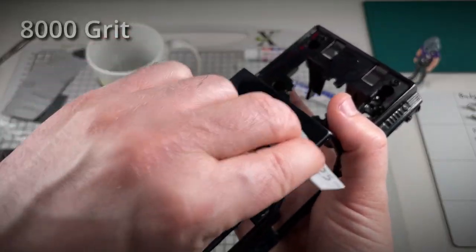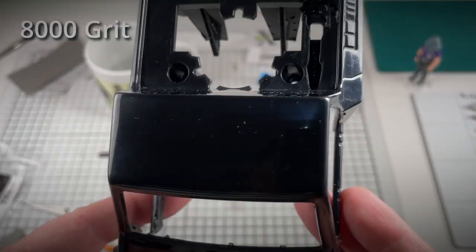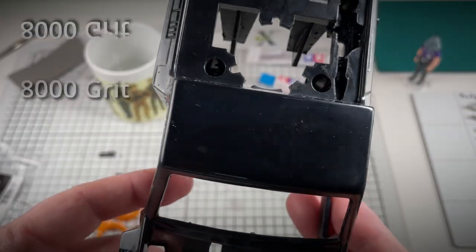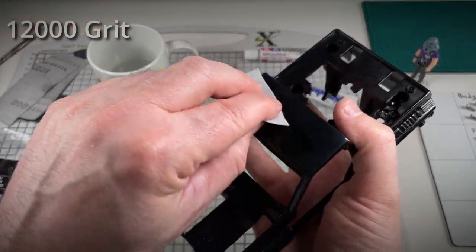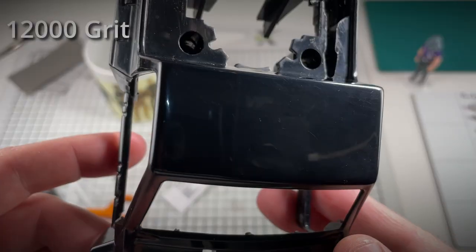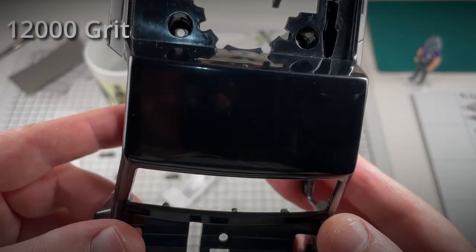Nearly there. Circular motion this time with a very fine polishing cloth. We're getting there now. One more cloth, I think. Very fine cloth. Plenty of water. Circular motion again. Yeah, looking fantastic. That's a good job.